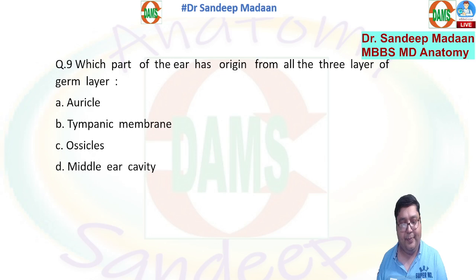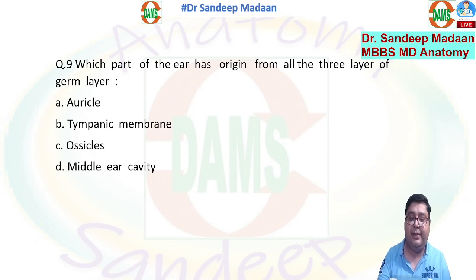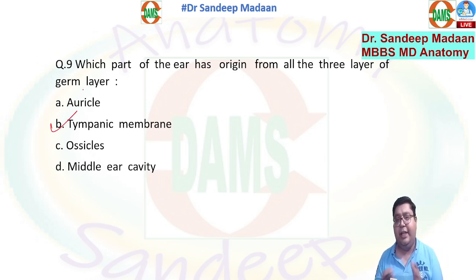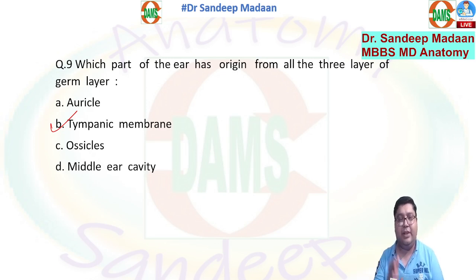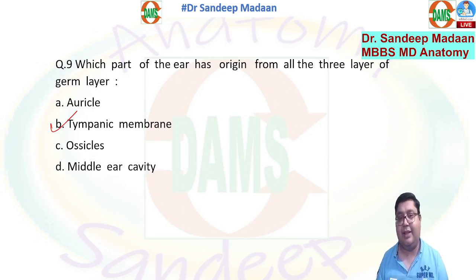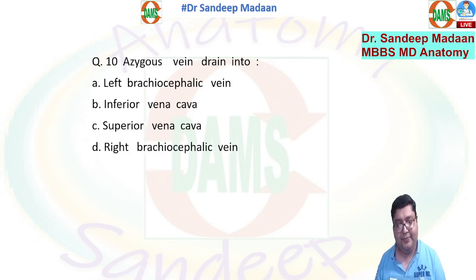Which part of the ear has origin from all three layers of the germ layer? The straightforward answer is the tympanic membrane, because it itself has three layers: the outer layer develops from ectoderm, the middle layer from mesoderm, and the inner layer from endoderm. That is why B is the correct answer.